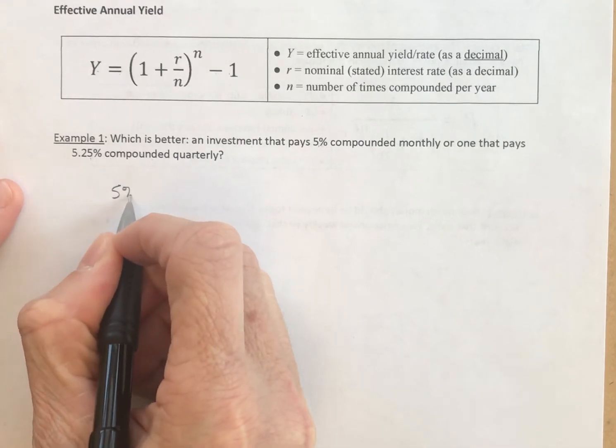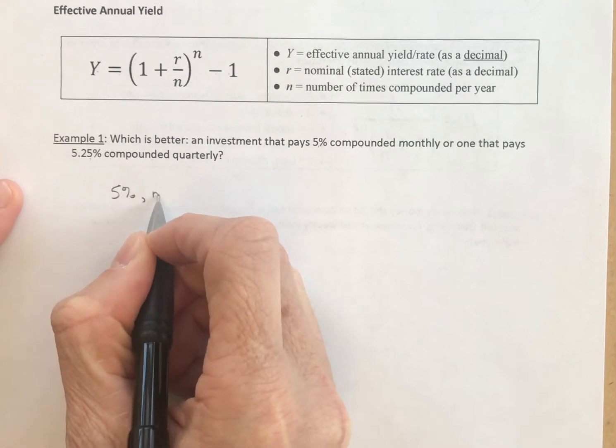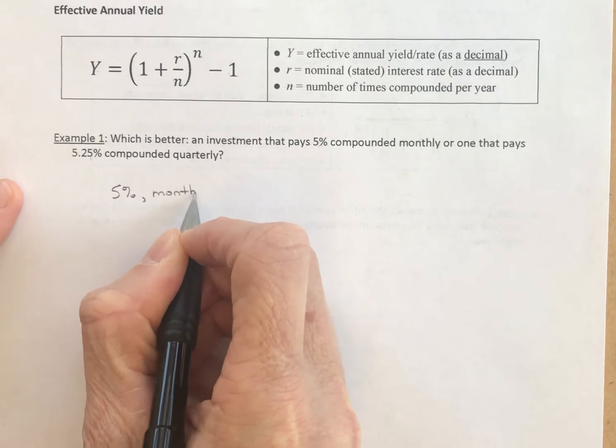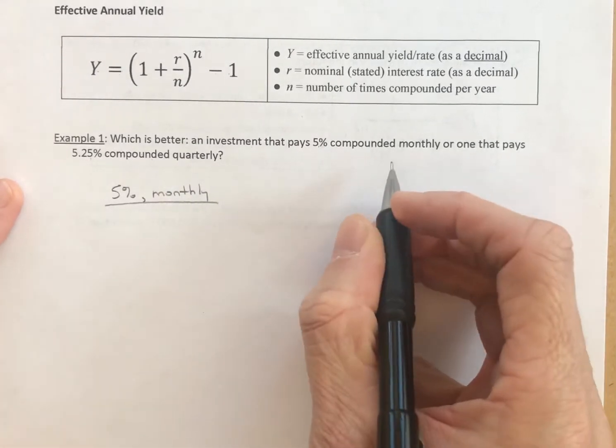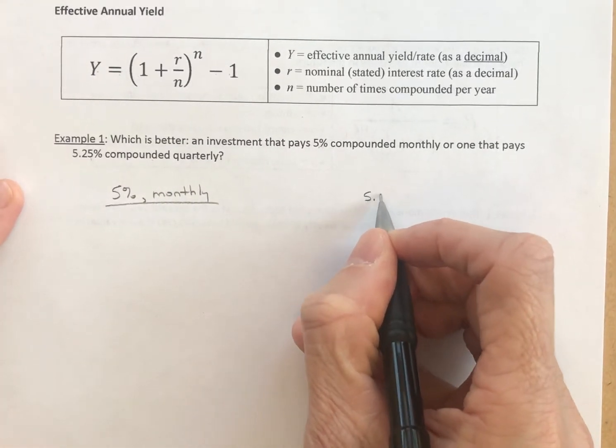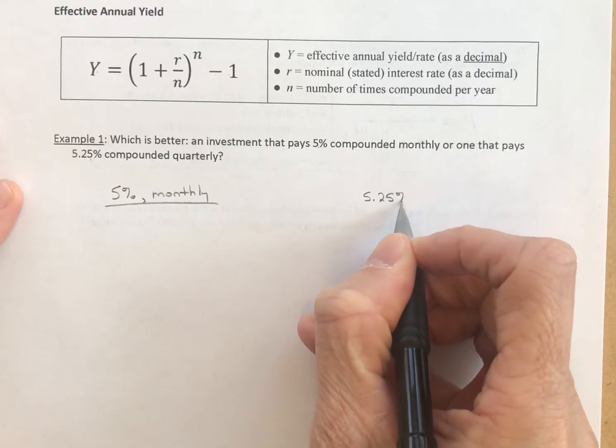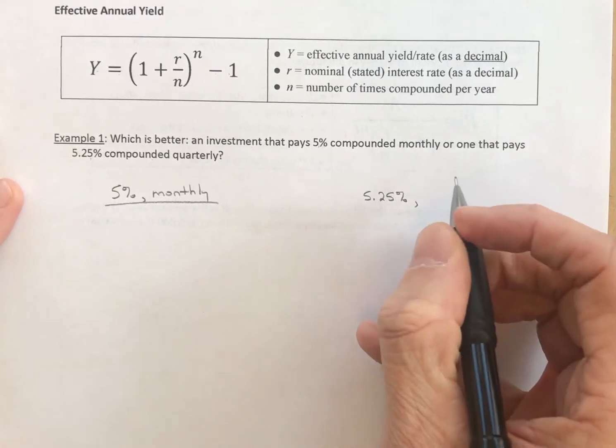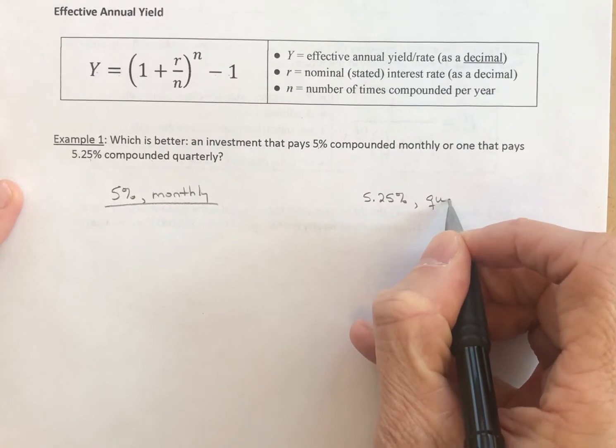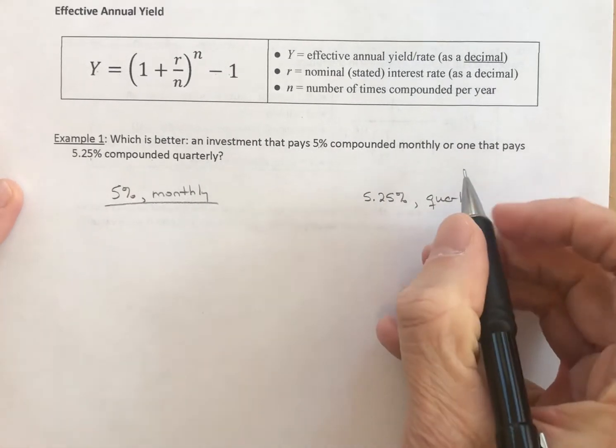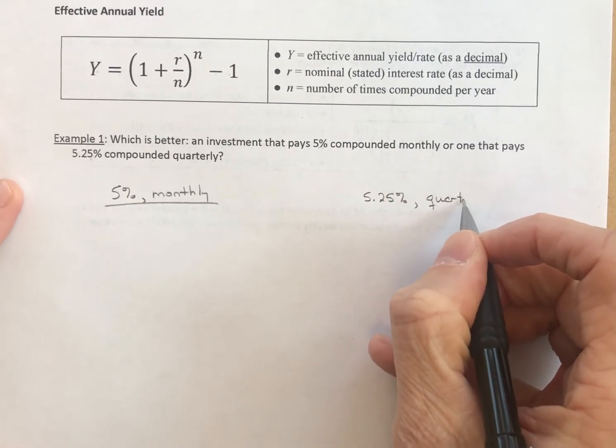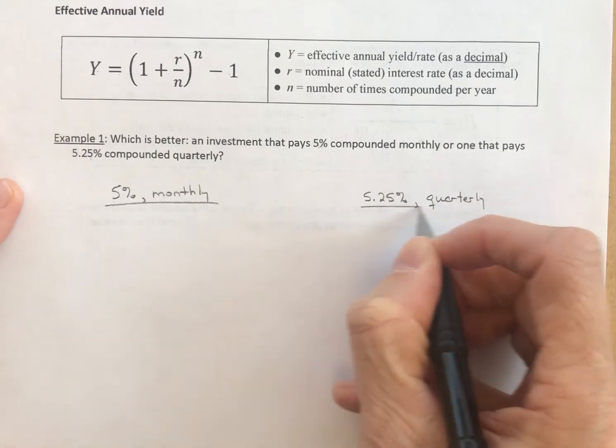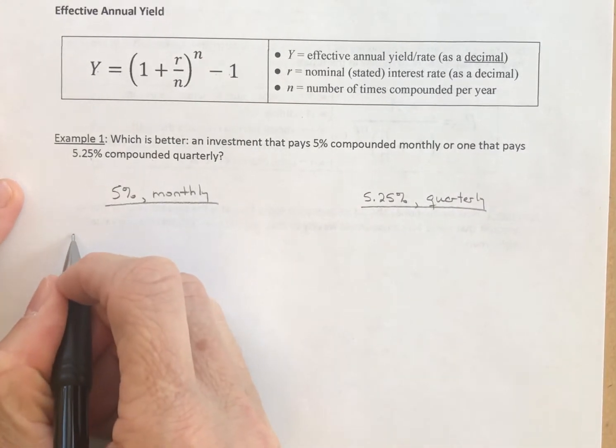The first one is going to be 5% and we're compounding monthly. The second one is 5.25%, and we're only compounding quarterly. Let's use our formula.